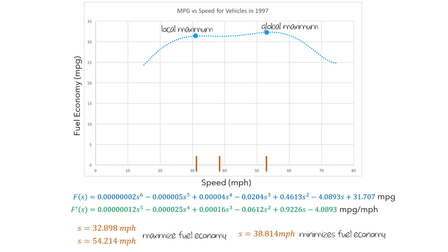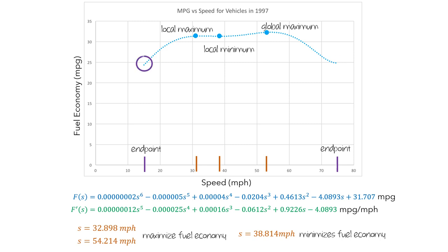Similarly, a speed of 38.814 gives us a local minimum — it's the smallest value of fuel economy for a small range of speeds. But just looking at the critical points doesn't tell us the global minimum. We also have to look at the endpoints of the function on the domain. By finding the point on the graph with the smallest y-value, we can see that the left endpoint will give us a global minimum.